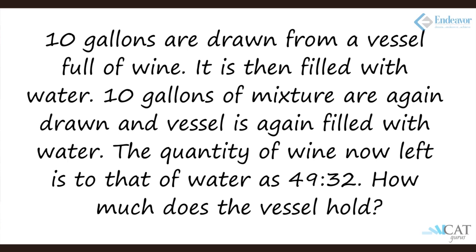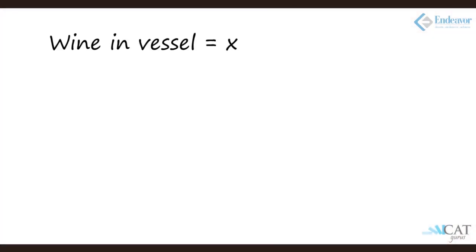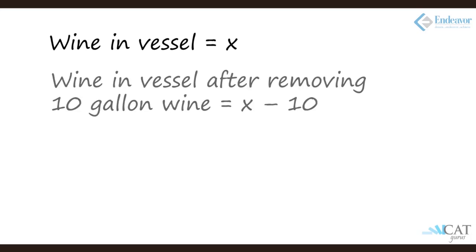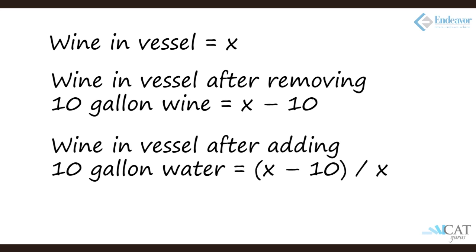Now let us see how we find out the total quantity of wine in the container. We had already assumed this quantity to be x. After the first process, if initially the total quantity was x, and I remove 10 gallons out of it and replace it by water, the proportion of wine now in the container will be x minus 10 upon x.